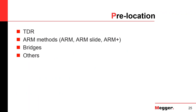For pre-location, the typical methods are TDR, then the arc reflection methods (there are a few of those nowadays), then bridges — which unfortunately had to be left out of this presentation. Just to give an idea: bridges are typically for faults where you cannot use the arc reflection method and cannot use the TDR — they fill the niche between very low resistance faults and high resistance faults that cannot be addressed with the arc reflection method. There are also other methods like the ICE method or the decay method. That is all pre-location.